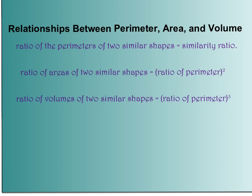The first thing we know is that the ratio of the perimeters of two similar shapes equals the similarity ratio. Whatever the similarity ratio is, our ratio of perimeters will be the exact same thing.